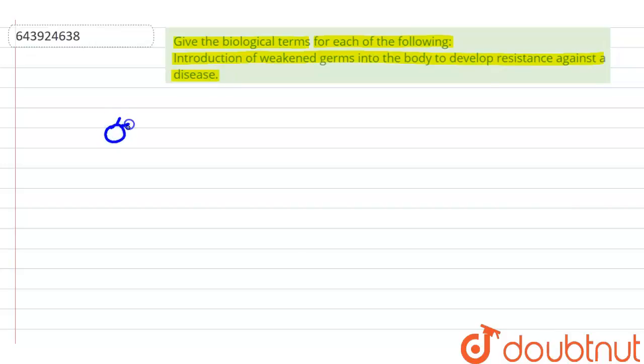So what we are doing, we are taking a virus. Let's assume this is the virus and we have to weaken it. How do I make it weak? Either subject it to heat or we can subject it to chemical treatment and make it a weak pathogen.